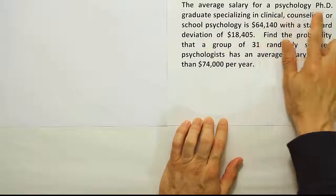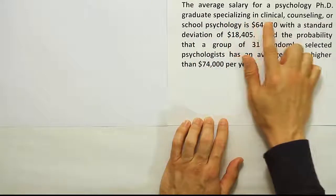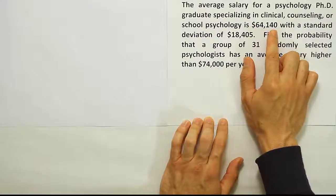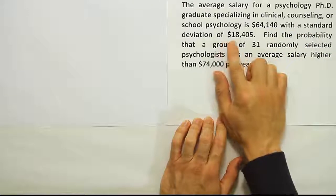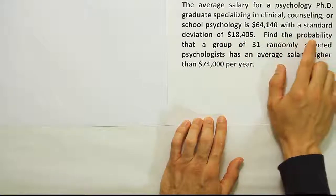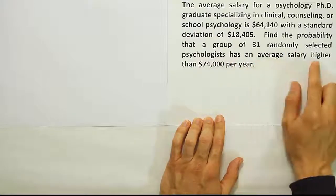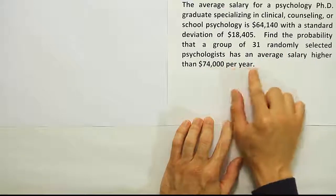The average salary for a psychology PhD graduate specializing in clinical, counseling, or school psychology is $64,140 with a standard deviation of $18,405. Find the probability that a group of 31 randomly selected psychologists has an average salary higher than $74,000 per year.